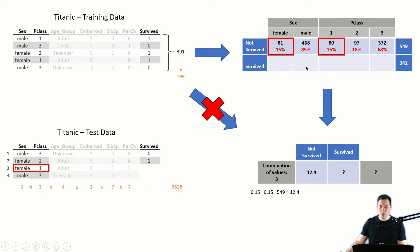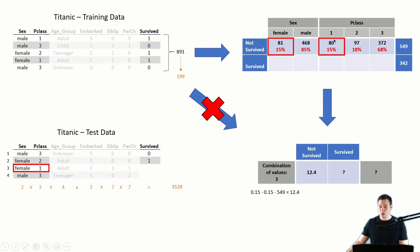More generally, we made the assumption that the features sex and passenger class are independent of each other. This means those features don't influence each other. For example, if we only look at those 81 female non-survivors instead of all non-survivors, we would expect the passenger class values to be distributed the same way as for all non-survivors — so 15% in first class, 18% in second, and 68% in third class. And the other way around is also true: if we look at only those 80 non-survivors who travel in first class, we would expect 15% to be female and 85% male.